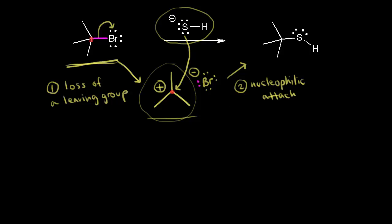In our final product, this is our carbon in red. A lone pair of electrons on the sulfur forms this bond to give us our product. Let's go to the video so we can see this mechanism using a model set.